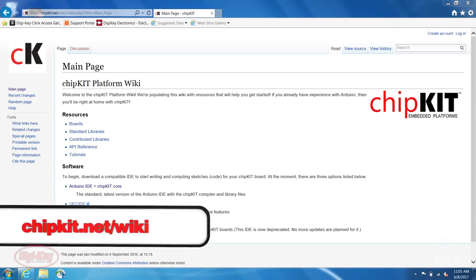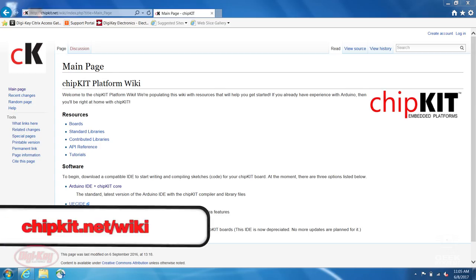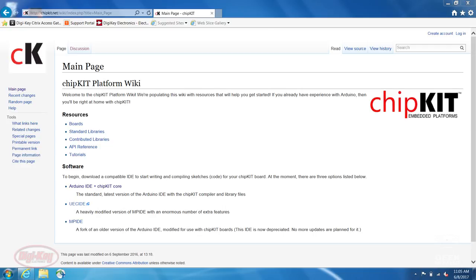First we're going to be talking about how to get the libraries and everything set up on your IDE so you can upload all of the sample code that they provided. You simply just need to go over to the chipkit wiki site and from there they'll break it down step by step how to get the Arduino IDE, make sure you have the right version, and also uploading their boards and their libraries.